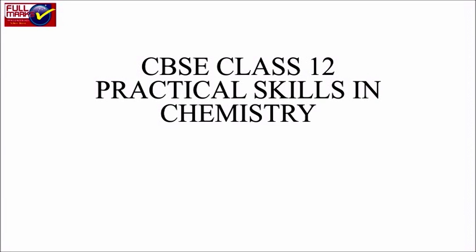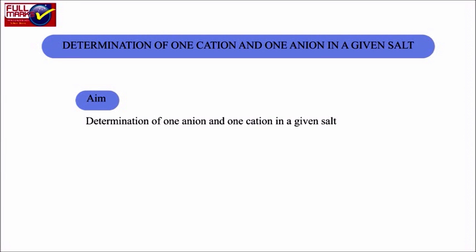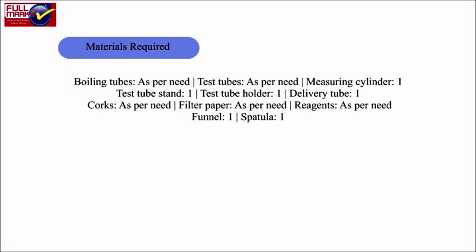CBSE Class 12 practical skills in chemistry, experiment number 11: qualitative analysis determination of one cation and one anion in a given salt. Materials required: boiling tubes, test tubes, measuring cylinders, test tube stand, test tube holder, delivery tube, corks, filter paper, reagents, funnel, and spatula.